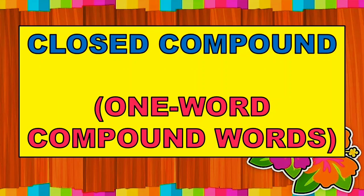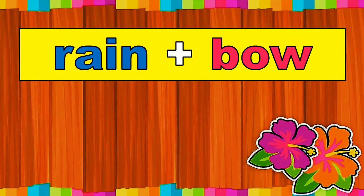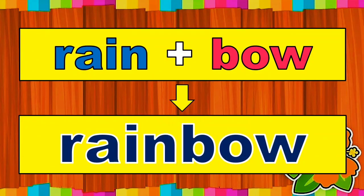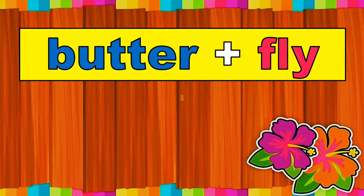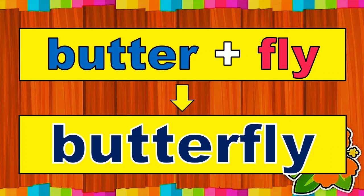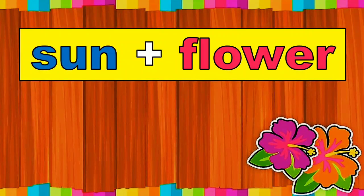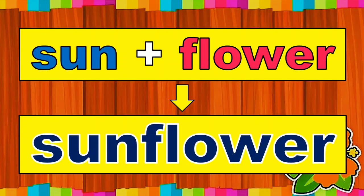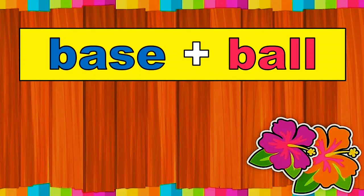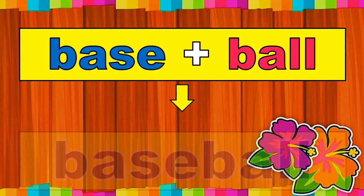Here are some examples of closed compound, or the one-word compound words. Rain plus bow equals Rainbow. Butter plus fly equals Butterfly. Sun plus flower equals Sunflower. Base plus ball equals Baseball.